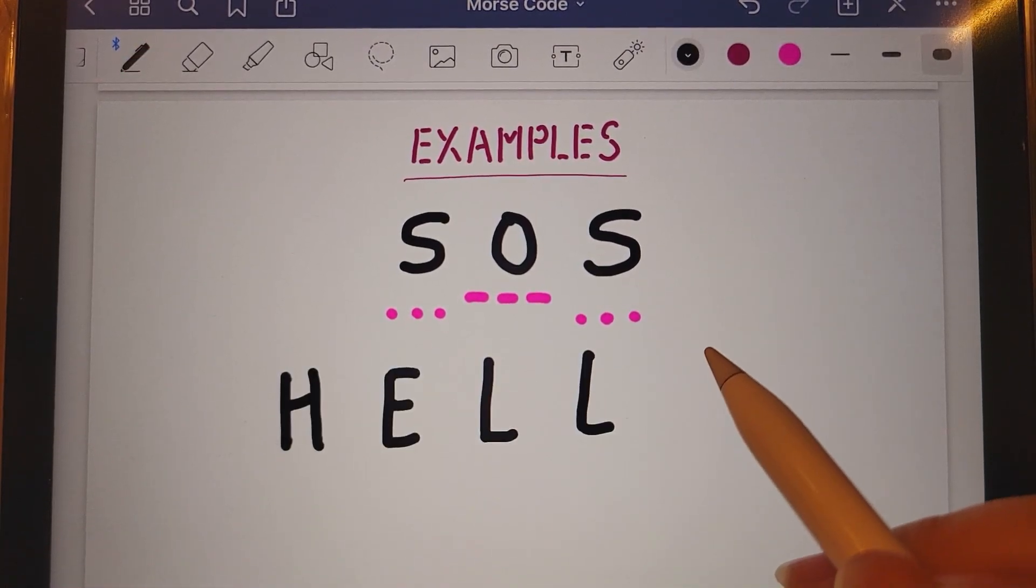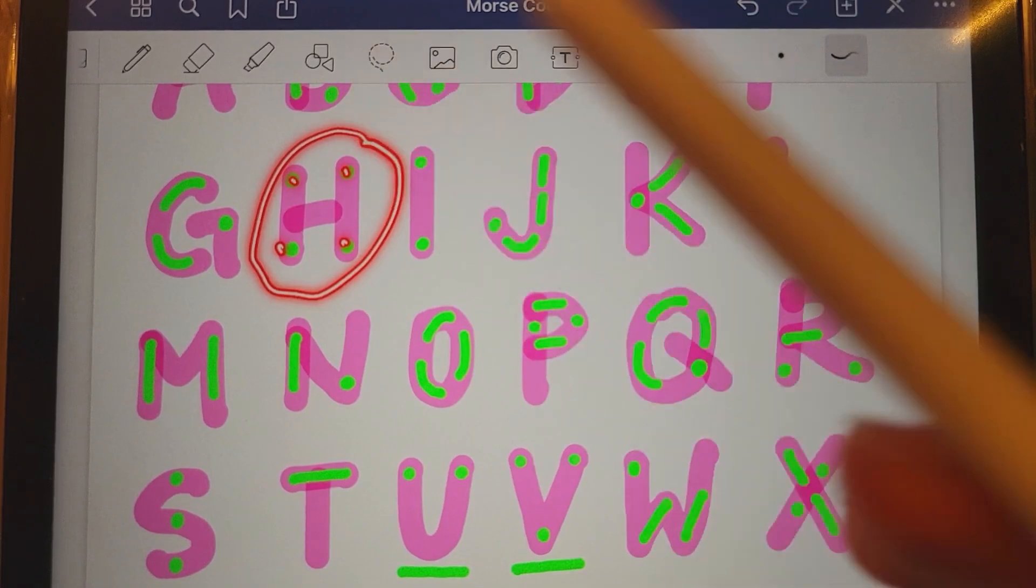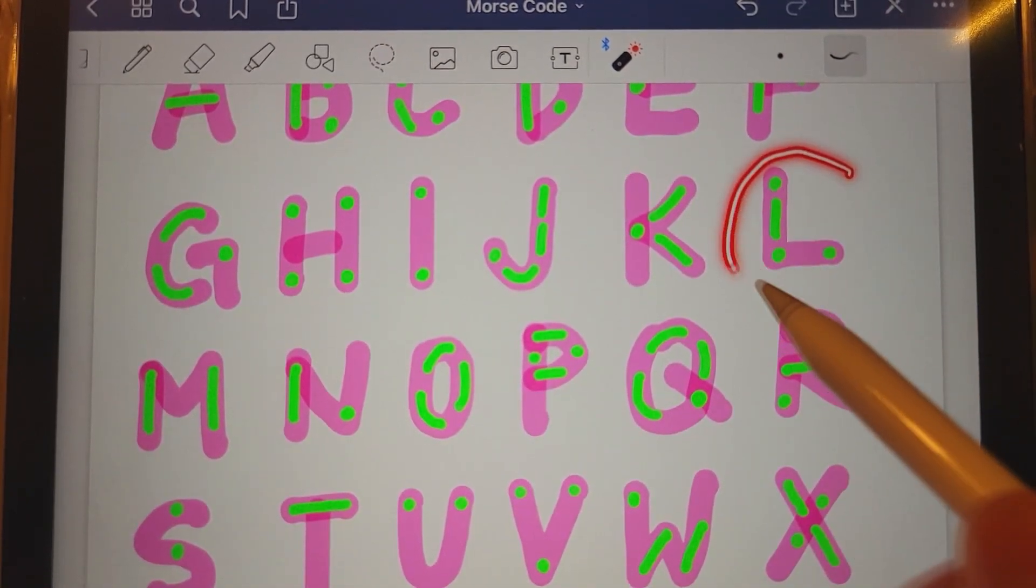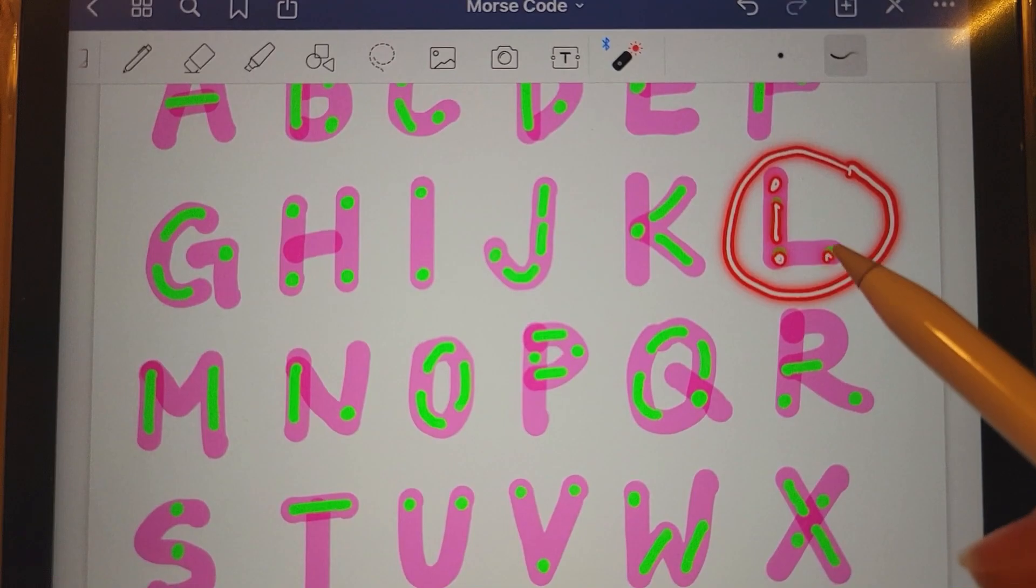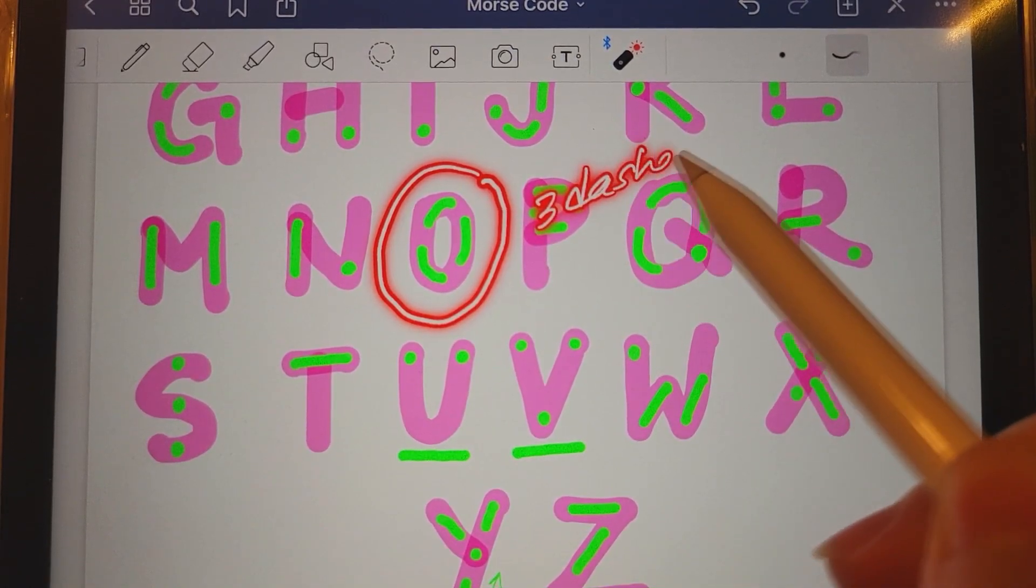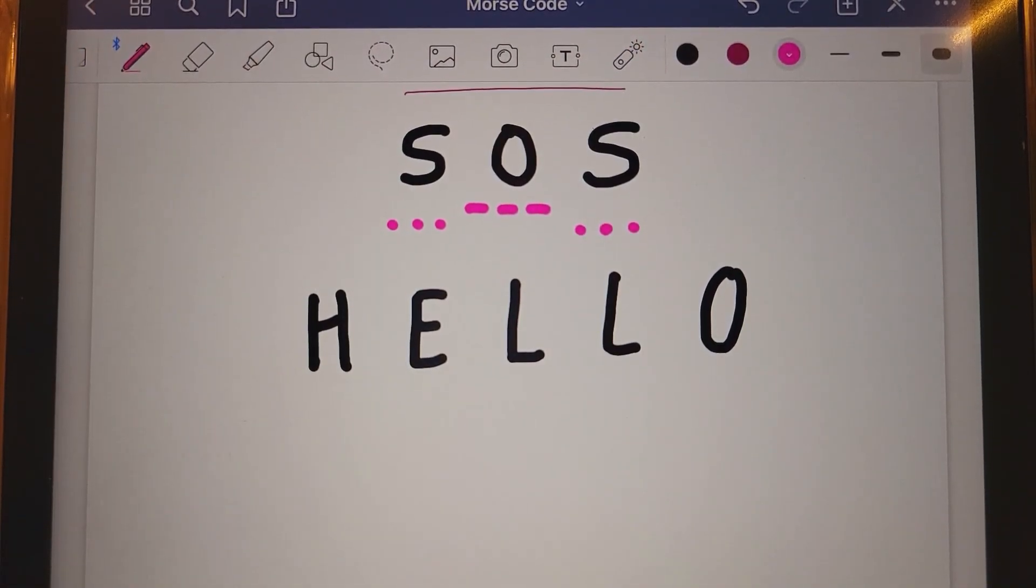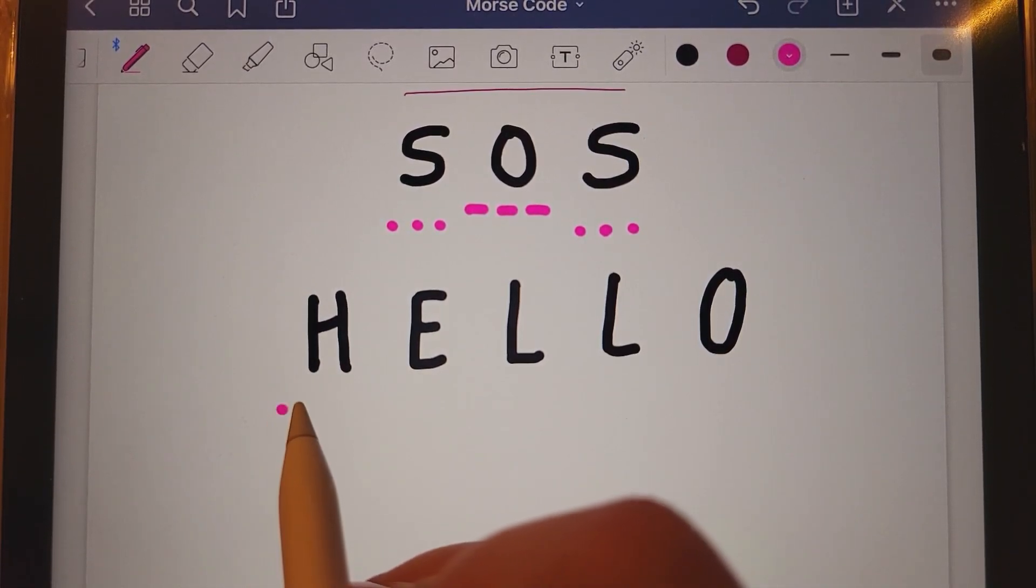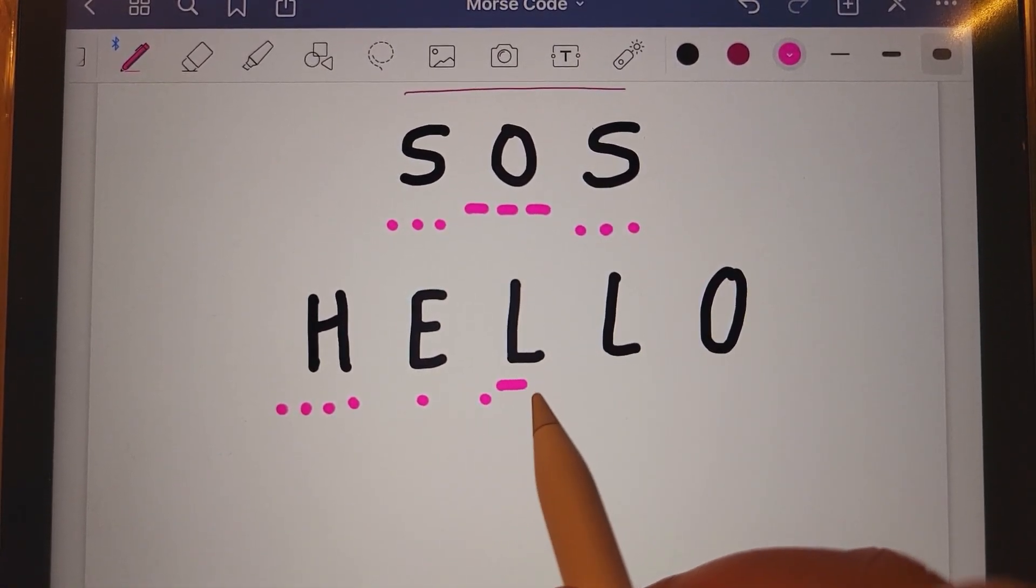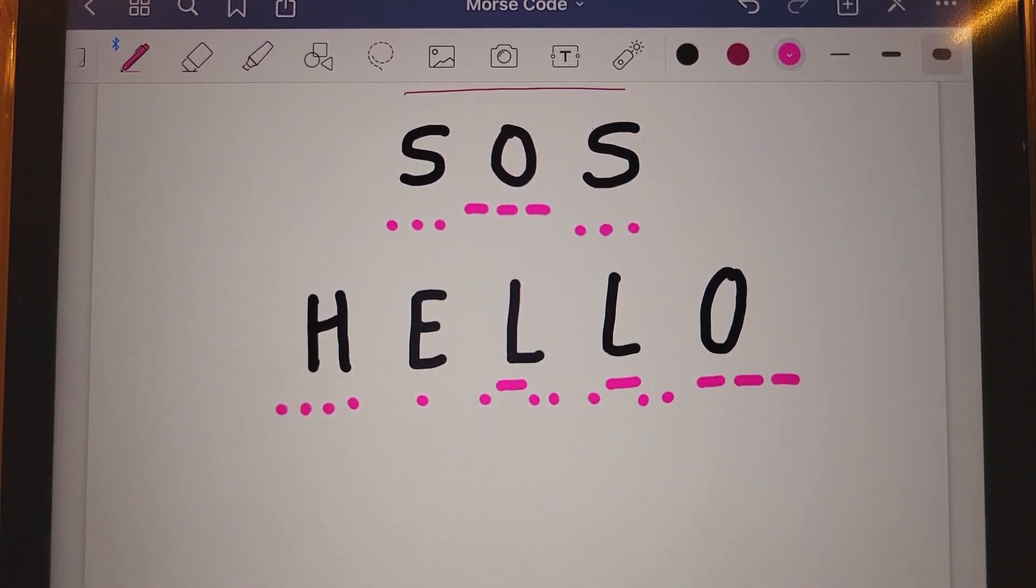Awesome! Next, we'll try hello. So, the H has four dots in it. The E has, I don't know if you remember, but one dot. The L is dot dash dot dot. And then lastly, the O is three dashes. Now, you'll see that if you can remember, perhaps you can think of it before I write the answers down. But H is dot dot dot dot, E is dot, L is dot dash dot dot, and O, you're right, three dashes. Good job!